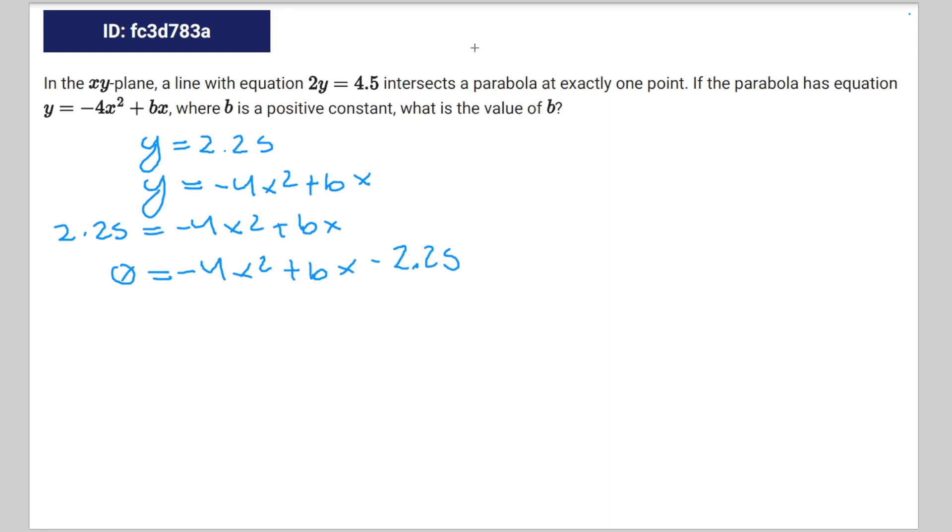Then you're going to use the discriminant, which is equal to b squared minus 4ac. For equations with exactly one solution, which means one point in a system of equations, it's going to equal 0.